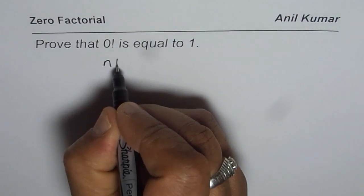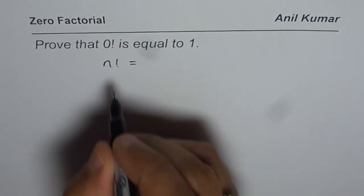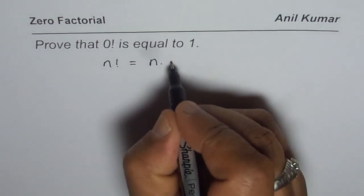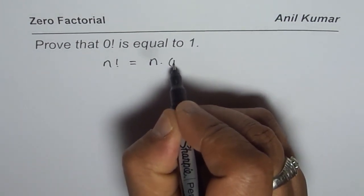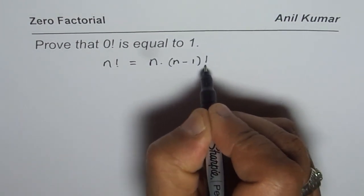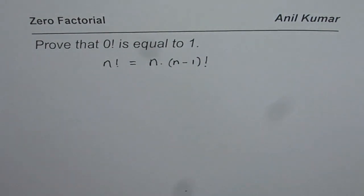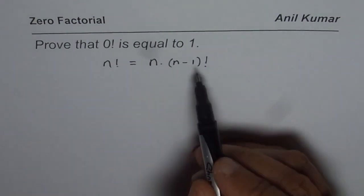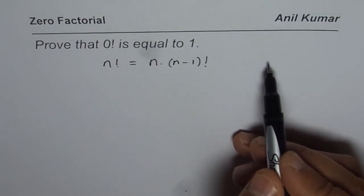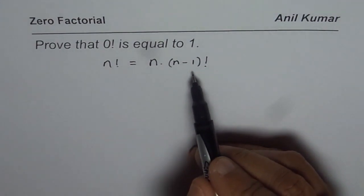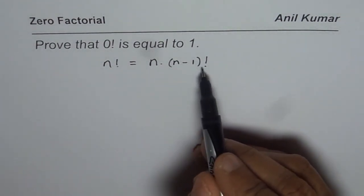You know, n factorial by definition is what? n factorial is n times n minus 1 factorial. Do you see that? So, n factorial can be written as n times n minus 1 times n minus 2 times n minus 3 up to 1, which could be written as n times n minus 1 factorial.